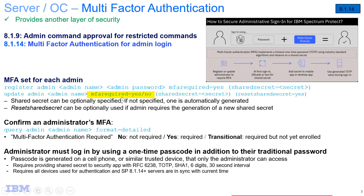With the MFA required equals yes parameter — or no to turn it off — you can enable or disable MFA. There is also a shared secret equals command if you want to utilize the same shared secret for multiple Spectrum Protect administrators. There is also a reset shared secret option if you need to reset a shared secret because, for instance, you lost your mobile phone where the application was stored.